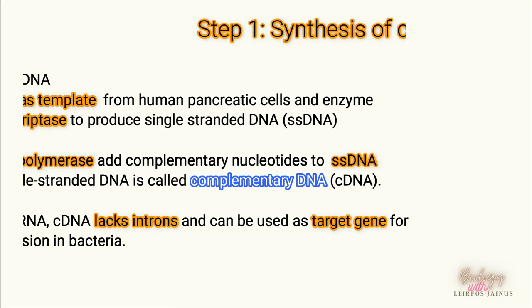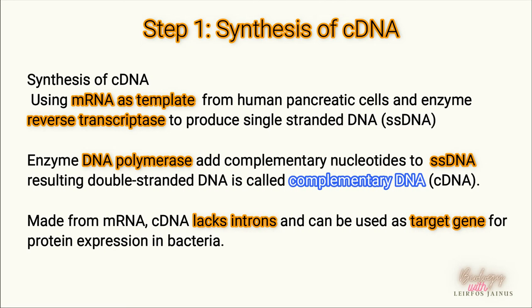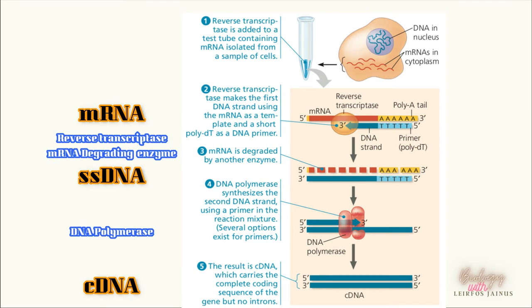The first step is synthesis of cDNA. The mRNA is extracted from human pancreatic cells and will be incubated with the enzyme reverse transcriptase to produce single-stranded DNA. The enzyme DNA polymerase will then be added to synthesize the complementary strand to form complementary DNA, or cDNA. The cDNA made from mRNA lacks introns and can be used as a target gene.